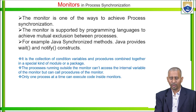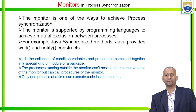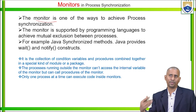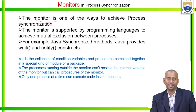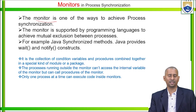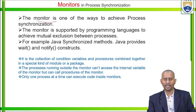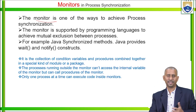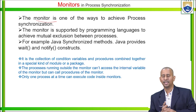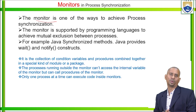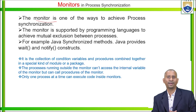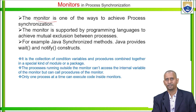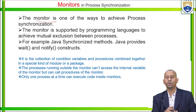Coming to the next concept: monitors. A monitor is one of the ways to achieve process synchronization. Monitors are supported by programming languages to achieve mutual exclusion between processes. For example, Java synchronized methods — Java provides wait as well as notify constructs. In process synchronization using monitors, we take a collection of conditional variables and procedures combined together in a special kind of module or package. Processes running outside the monitor cannot access the internal variables of the monitor, but can call procedures of the monitor, meaning only one process at a time can execute code inside the monitor.